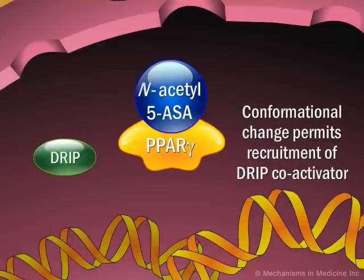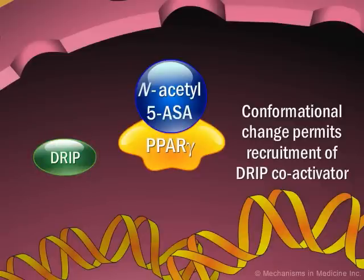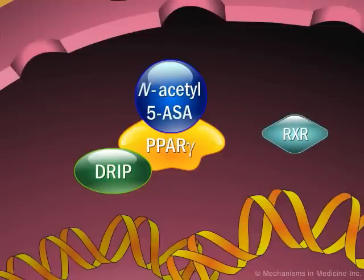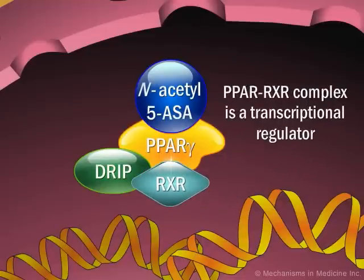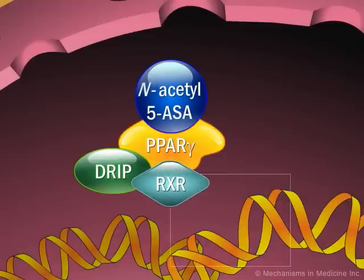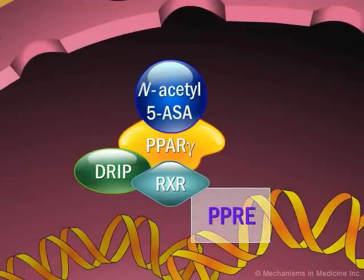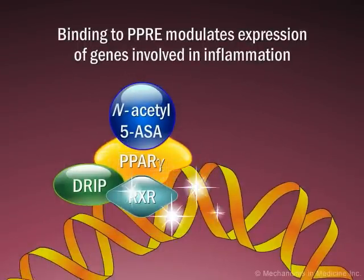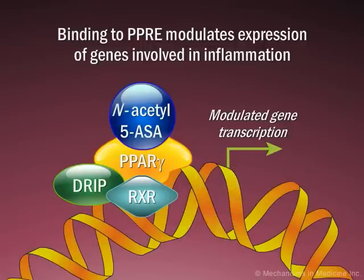This modification permits the recruitment of the coactivator vitamin D3-receptor-interacting protein, or DRIP, which interacts directly with PPAR-gamma. Heterodimerization with the retinoid X receptor, or RXR, occurs, resulting in formation of the PPAR-RXR complex, a transcriptional regulator. The PPAR-RXR heterodimer controls transcription by binding a regulatory PPAR-gamma response element, or PPRE, and modulating the expression of genes involved in the inflammation process.